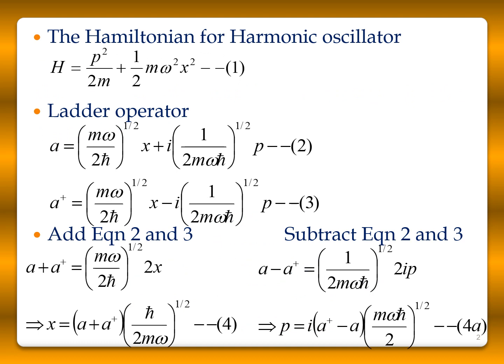The Hamiltonian for the harmonic oscillator is p squared by 2m plus half m omega squared x squared. We can write the position and momentum of the harmonic oscillator in terms of ladder operators: a is equal to (m omega / 2ℏ)^(1/2) times (x + i (1/2m omega ℏ)^(1/2) p), and taking the complex conjugate, a dagger equals (m omega / 2ℏ)^(1/2) times (x minus i (1/2m omega ℏ)^(1/2) p).